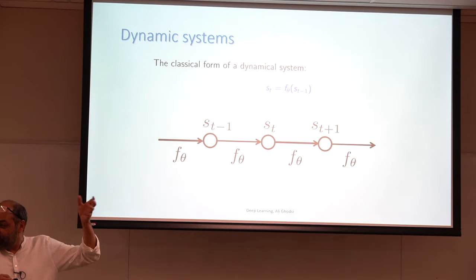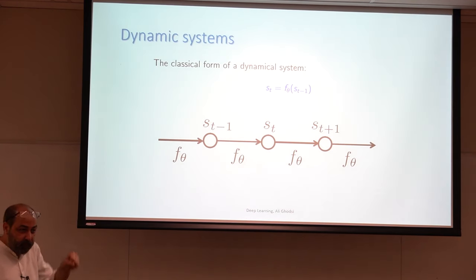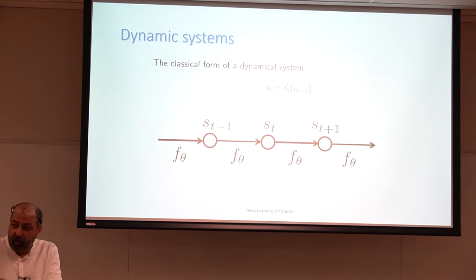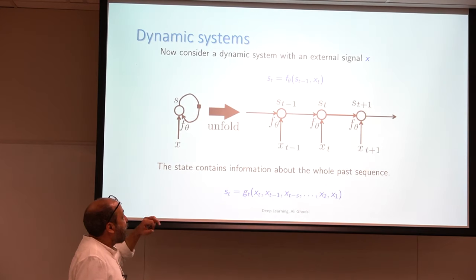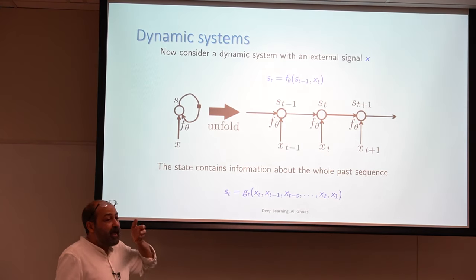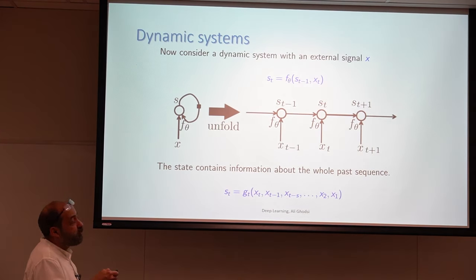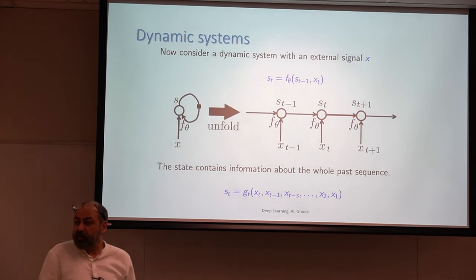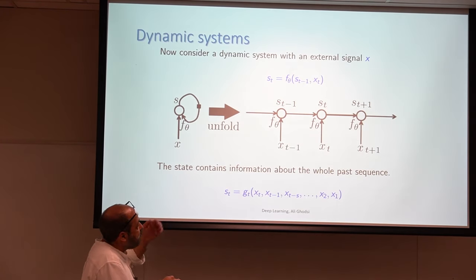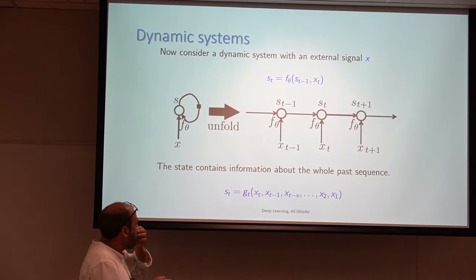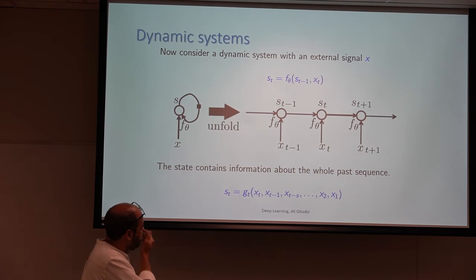There is a sort of Markovian assumption that knowing the current state makes the future and past independent from each other. You can think of RNN as an extension of this dynamic system where a state is not just a function of the previous state — it is also a function of the current observation. That combination basically makes RNN.